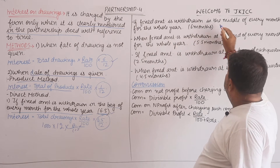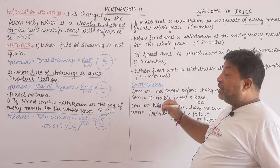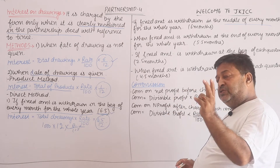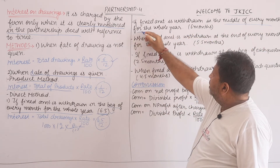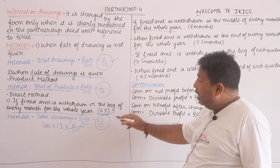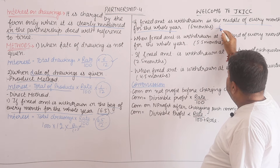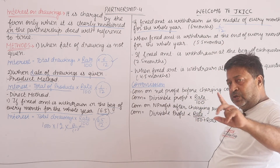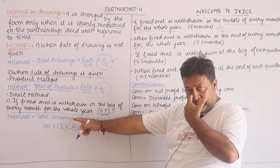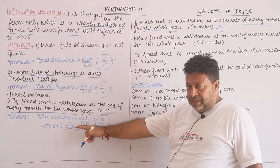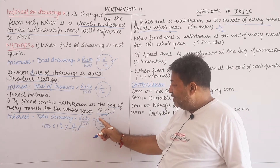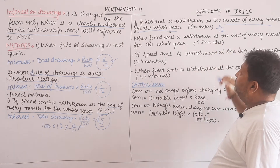Now, the middle of each month means 15th April, 15th May, 15th June — withdrawing throughout the year. In this case, 6.5/12 is replaced by 6/12. The formula is: total drawings into rate upon 100, multiplied by 6/12. We can calculate total drawings by multiplying by 12, since withdrawals happen every month for 12 months.